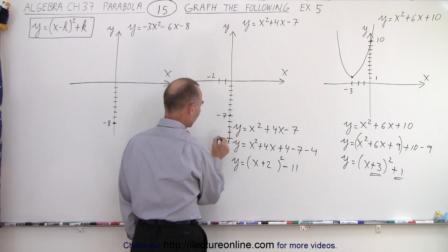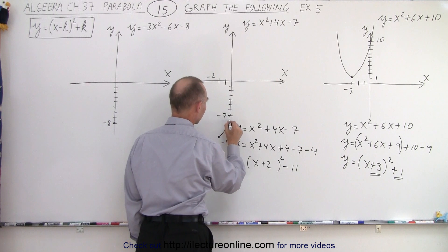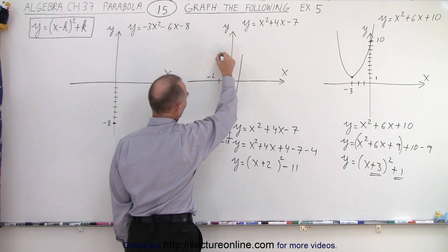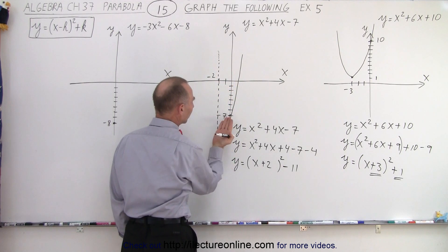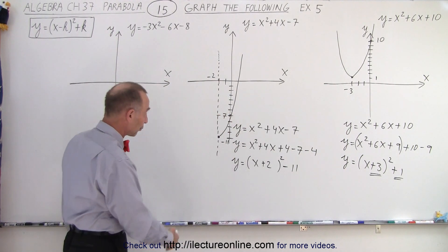And notice that the parabola will go from here. It opens upward, it goes to this point right there. So it'll look like this. And we can also draw an axis of symmetry.